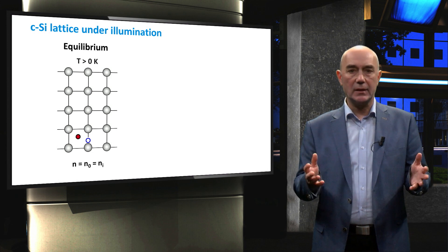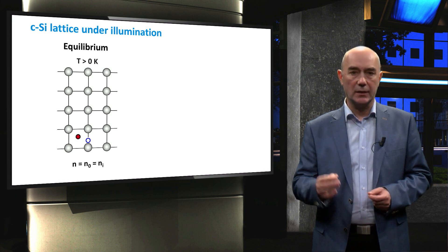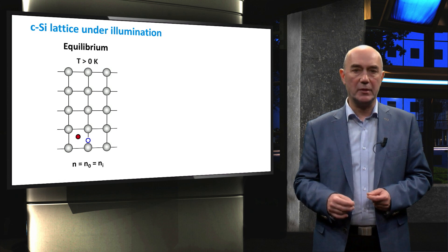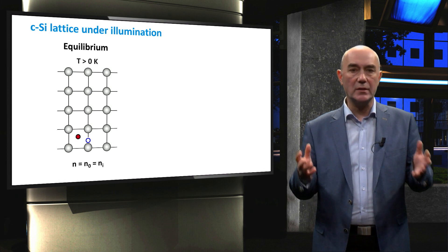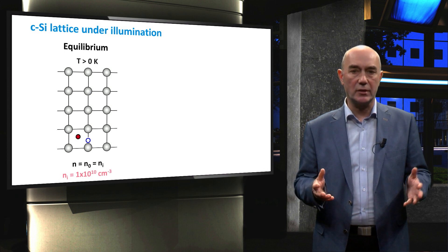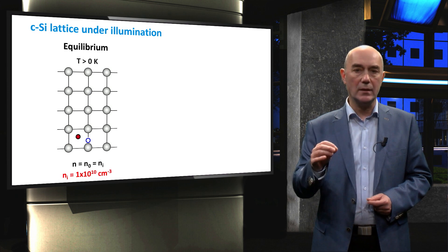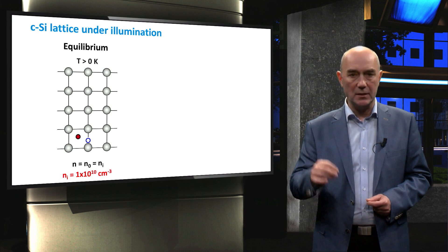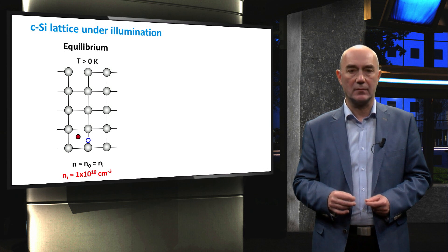You should remember that the concentration of electrons and holes is equal to the intrinsic concentration Ni. In crystalline silicon at room temperature, the intrinsic concentration is 1×10¹⁰ per cubic centimeter.